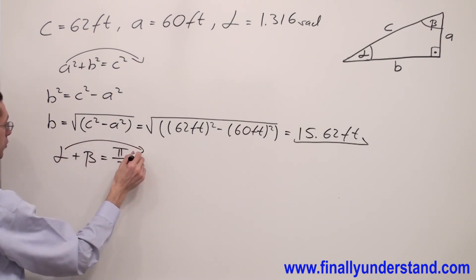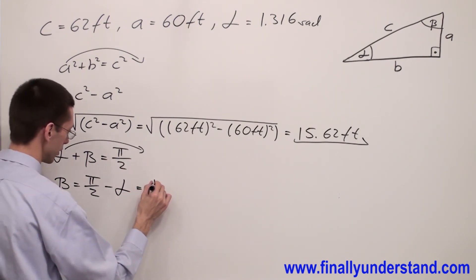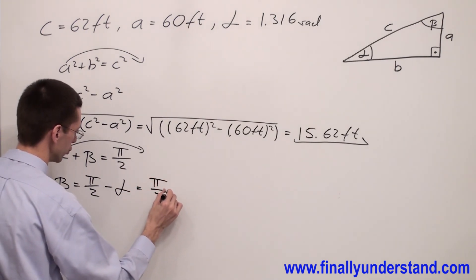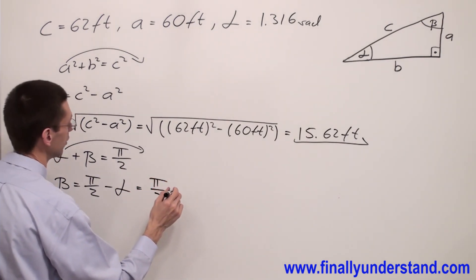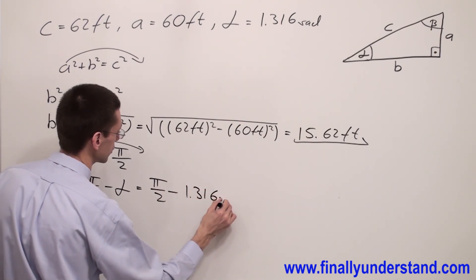And I'm going to have beta equals pi over 2 minus alpha. And I have pi over 2 minus alpha, which equals 1.316 radians.